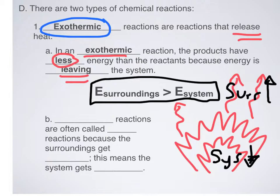The key thing, because of the law of conservation of energy, is that the amount of change is equal. The amount of heat being released by the system is equal to the amount of heat entering the surroundings. So if the system's going down by 10 energy units, the surroundings' energy is going up by 10 energy units.